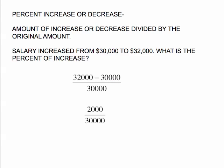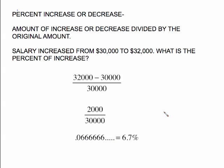Do this subtraction and you get two thousand, and now this is a fraction. You're asked to find the amount of percent increase, so we have to change this fraction to a percent. Use your calculator and divide two thousand by thirty thousand — that gives a repeating decimal. Change that to a percent by moving the decimal point two places to the right, and in this case we round off to six point seven percent.